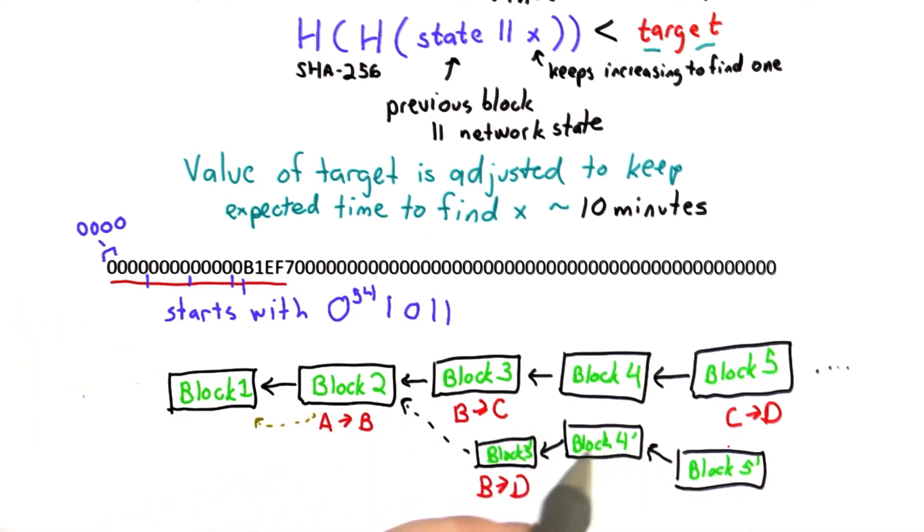If you create a longer chain trying to catch up to the chain that the network has, that's going to require a lot more computing resources and would only allow you to re-spend the bitcoins that you already owned.